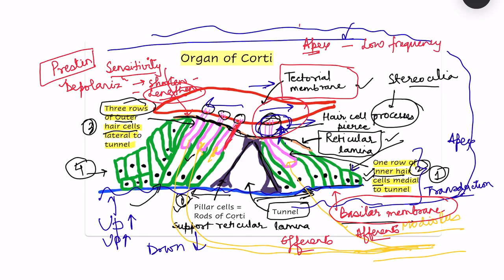At the base of the cochlea — where the stapes attaches — the basilar membrane is quite stiff and vibrates more in response to high frequency sounds. The rest of the structure and the hair cells are otherwise similar; only the vibrating pattern changes from base to apex. So from base to apex, the cochlea responds to a spectrum from high frequency to progressively lower frequency sounds.